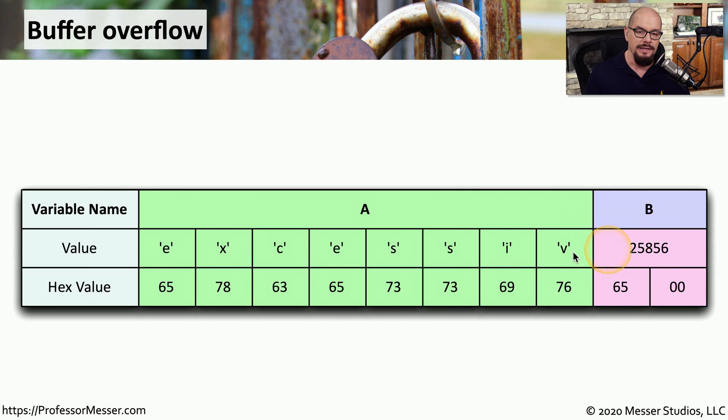And then the E at the end doesn't fit into that specific area set up for that variable. So it overflows into the next variable in memory and has that 65, which is the E, stuck onto variable B.